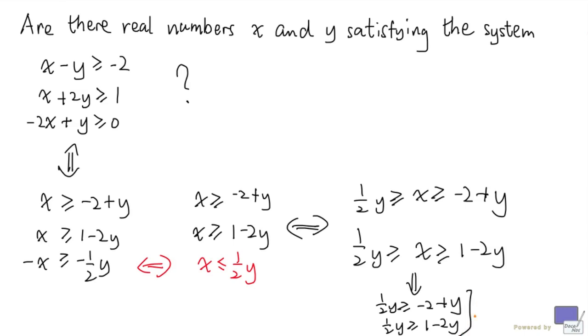But now, if you look at this system, it has only the variable y. And if we simplify this, we'll get minus one half y to be at least minus 2, and 5 over 2y to be at least 1.